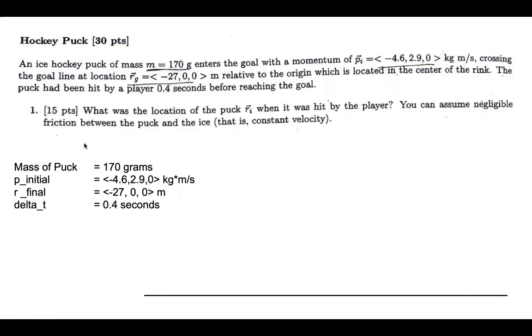So let's review the origin. The delta t is 0.4. And the question is, what was the location of the puck when it was hit by the player? We can assume that the friction is negligible.